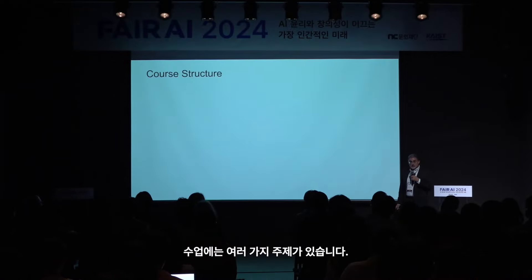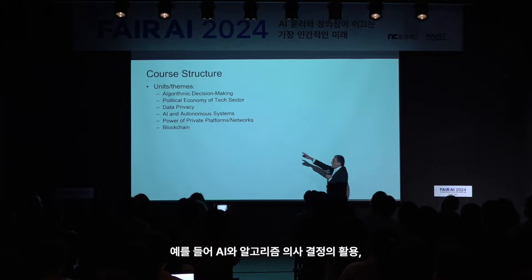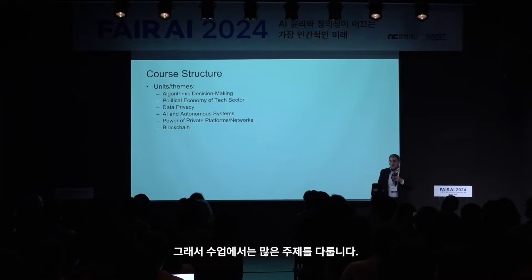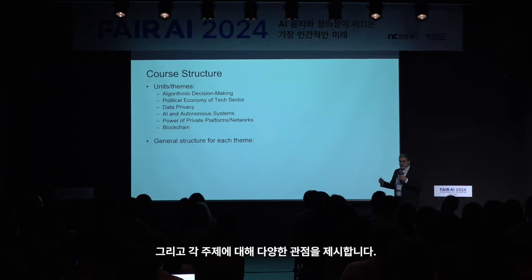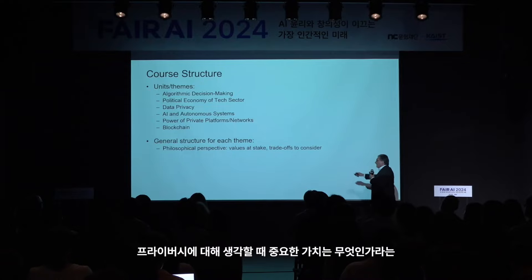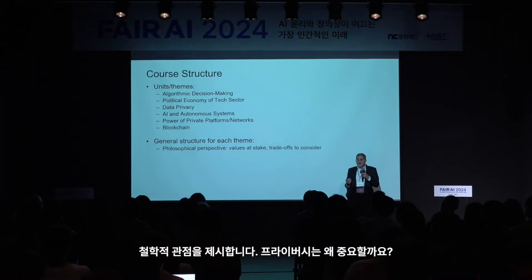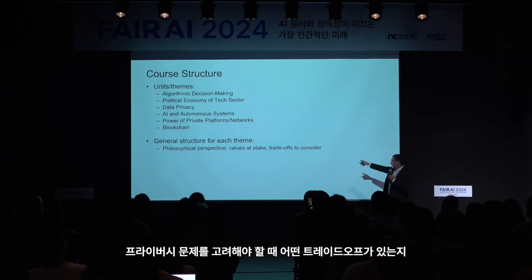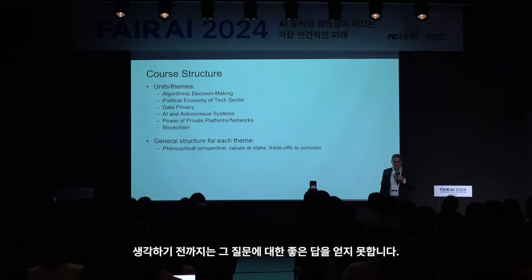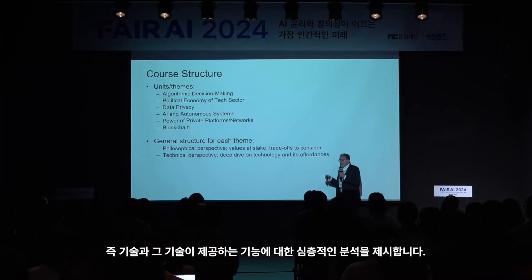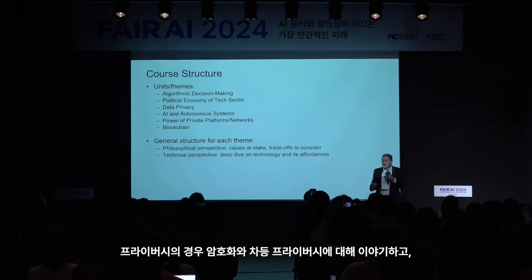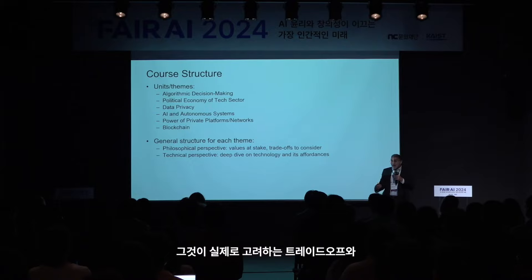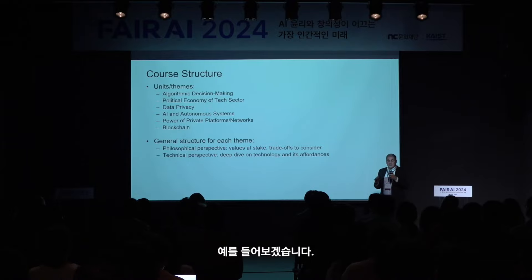The course covers themes like AI in algorithmic decision making, data privacy, and political economy. For each topic, we present multiple viewpoints. We provide a philosophical perspective—what values are at stake when we think about privacy and why does privacy matter? Then a technical perspective—a deep dive on the technology. For privacy, we talk about encryption and differential privacy, and how technical solutions interplay with the trade-offs we consider. For example, in end-to-end cryptography in an application like WhatsApp, messages are encrypted so only sender and receiver can see them.